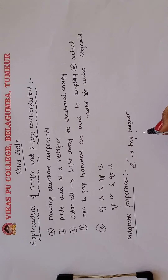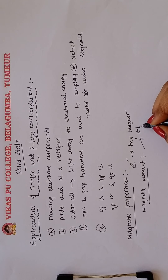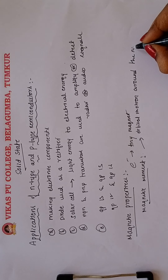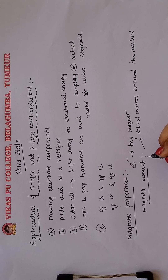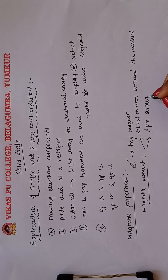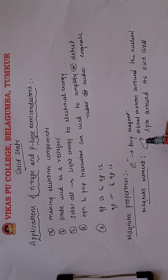The magnetic moment arises due to two types of motions of electrons: one is orbital motion around the nucleus, and the second type of motion is spin around its own axis. Due to these two types of motion, the magnetic moment arises.